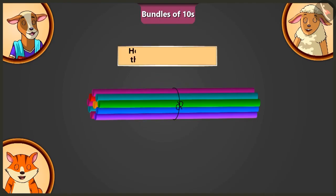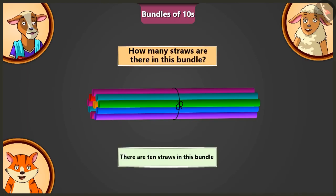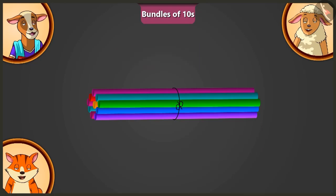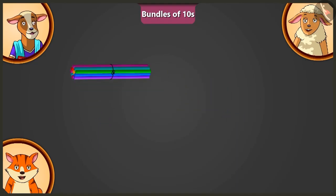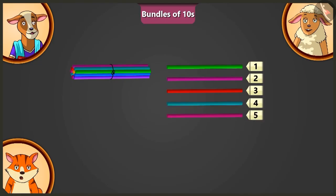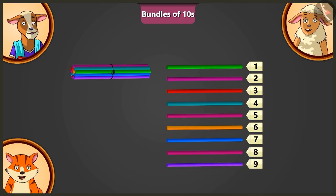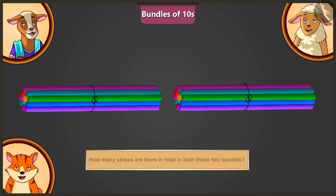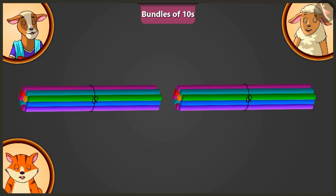Billy, how many straws are there in this bundle? There are 10 straws in this bundle. Come on. Now, in the same way, make a second bundle of 10 straws. 1, 2, 3, 4, 5, 6, 7, 8, 9 and 10. Billy, how many straws are there in total in both these bundles? In both these bundles, there are 10 and 10, 20 straws in total.